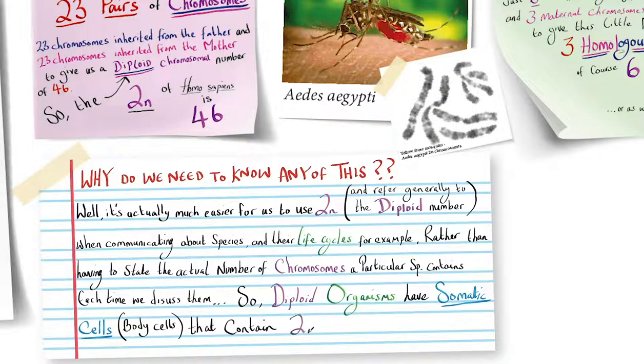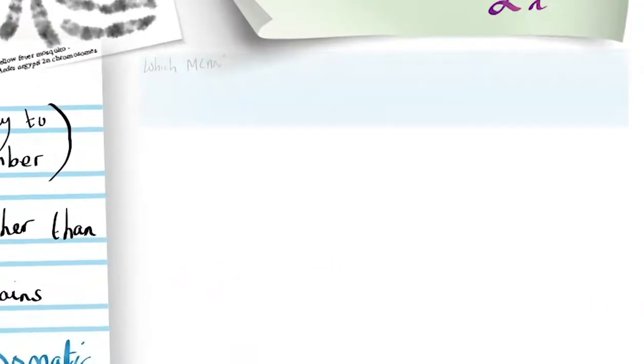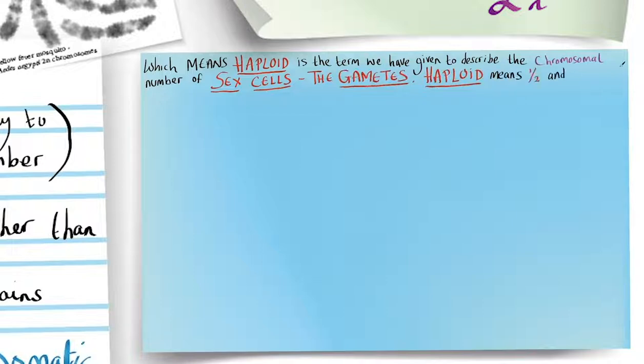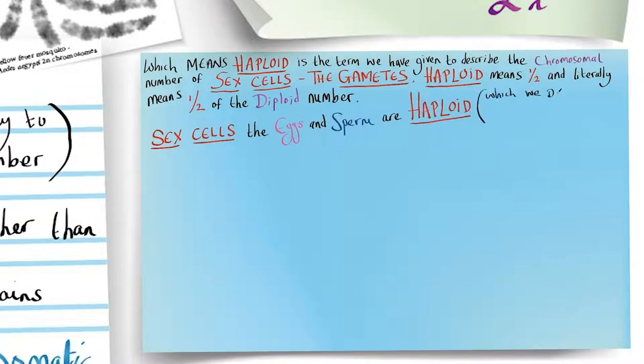So diploid organisms have somatic cells, body cells, that contain 2n chromosomes, which means haploid is the term we have given to describe the chromosomal number of sex cells, the gametes. Haploid means half and literally means half of the diploid number. Sex cells, eggs and sperm, are haploid, which we designate as n, which means eggs and sperm contain half of the diploid chromosomal number, half of the genetic information.